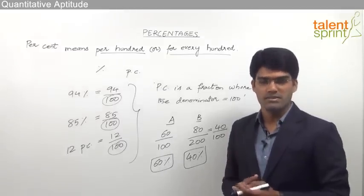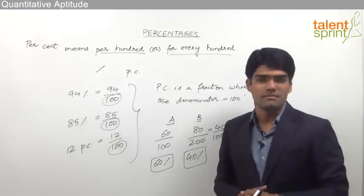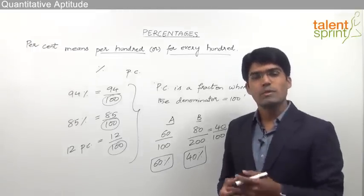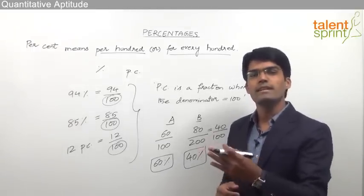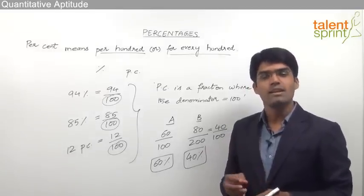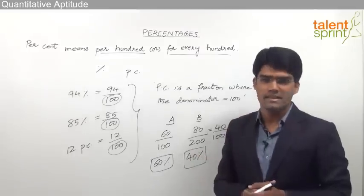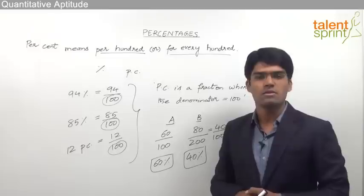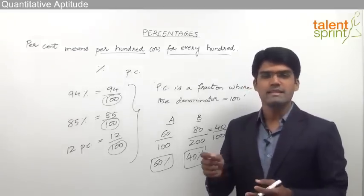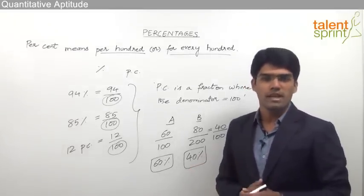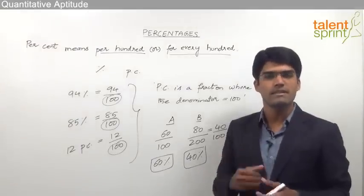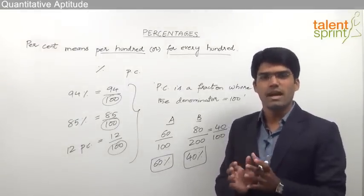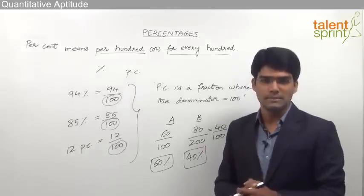Similarly, even when we calculate profit or loss, we generally calculate in terms of percentages so that the understanding is very simple. For example, if a businessman makes a profit of 20 percent, it means for every hundred rupees invested he made a profit of 20 rupees. When we say a loss of 5 percent, it means for every hundred rupees invested the loss was 5 rupees. Wherever we use percentages, the idea is to make comparison or understanding simple.